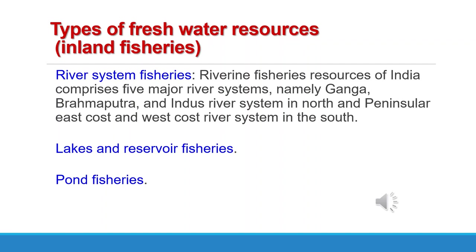Freshwater resources are also known as inland fisheries. The different types of freshwater resources in India include: first, river system fisheries — riverine fisheries comprising five major river systems like Ganga, Brahmaputra, Indus in North India and Peninsular East Coast and West Coast river systems in the South. Second is lakes and reservoirs fisheries, and third is pond fisheries. In this lecture we will study the different river systems of India and fish fauna found in them.